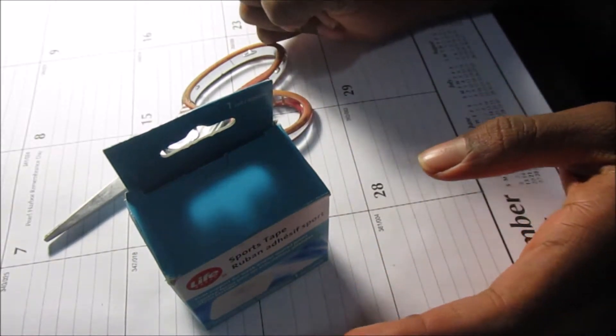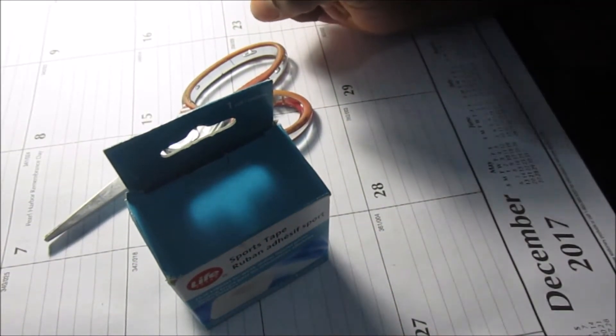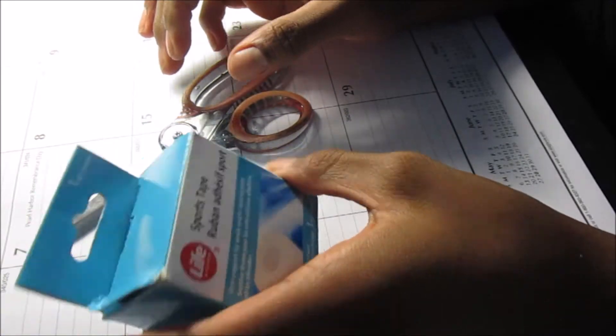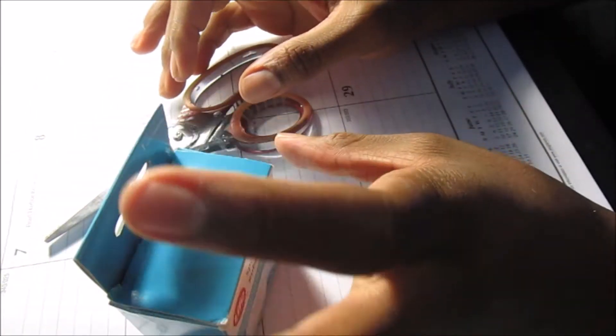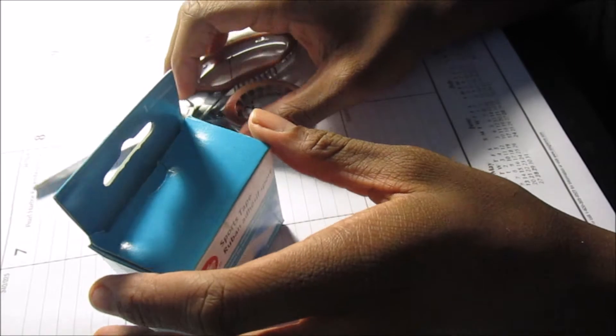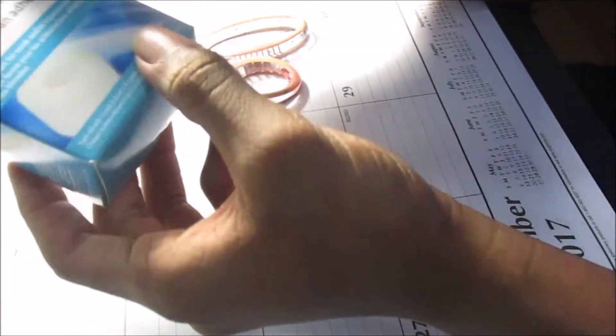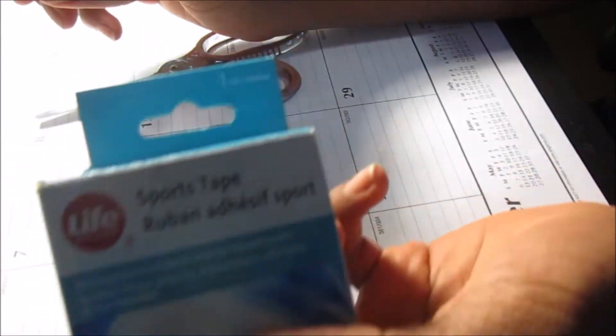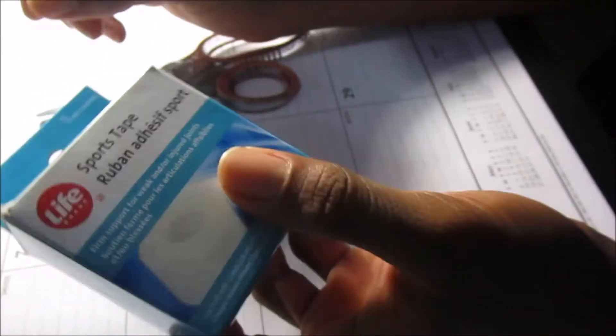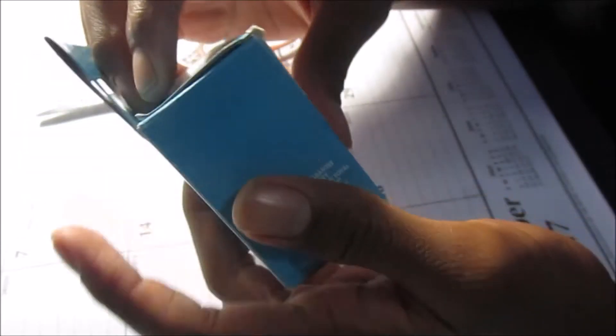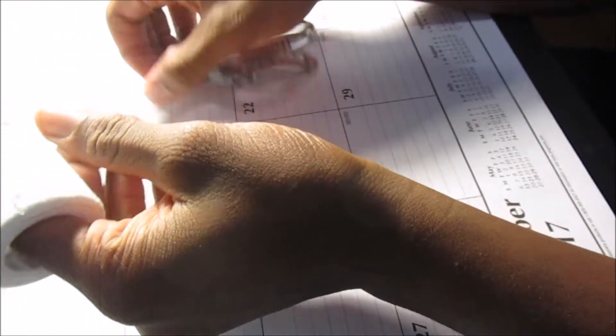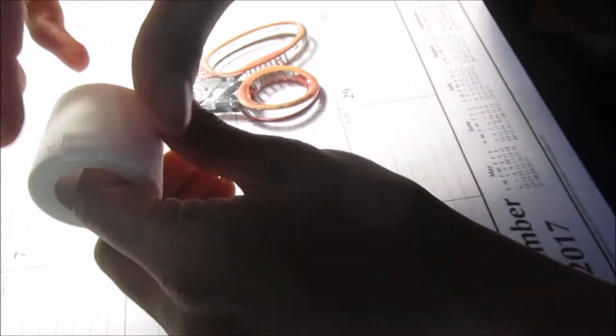What's good YouTube, I came back with another video. Today I'm gonna show you how to wrap your finger if you break it. First thing you need to do is get some sports tape. You can get it from Walmart, Shoppers, wherever your closest convenience store is.